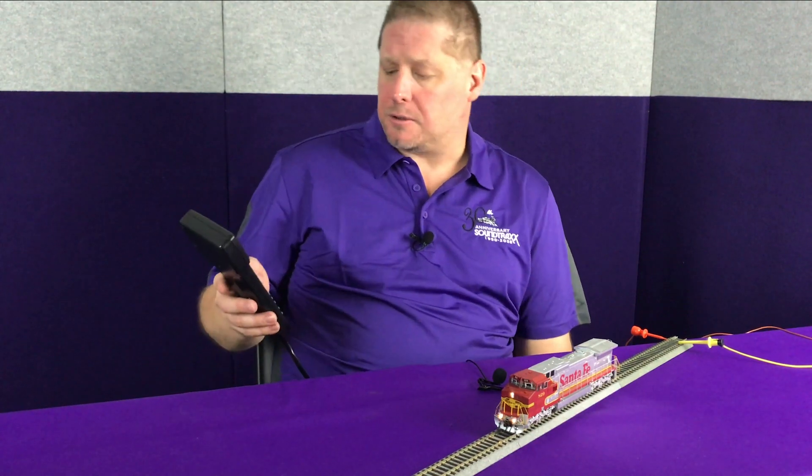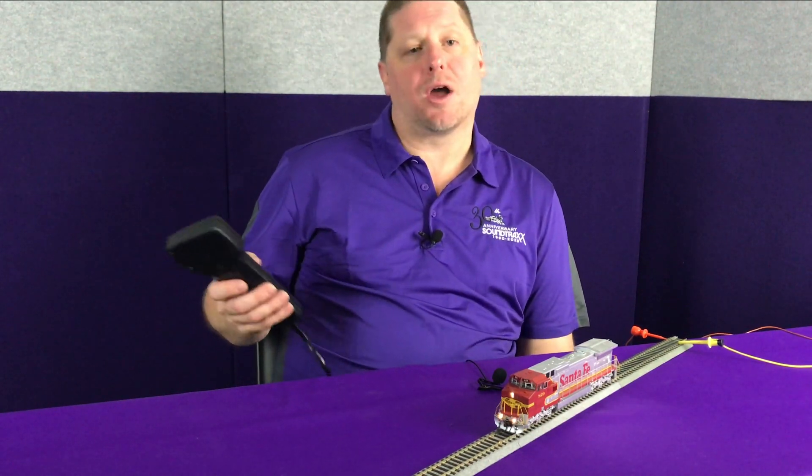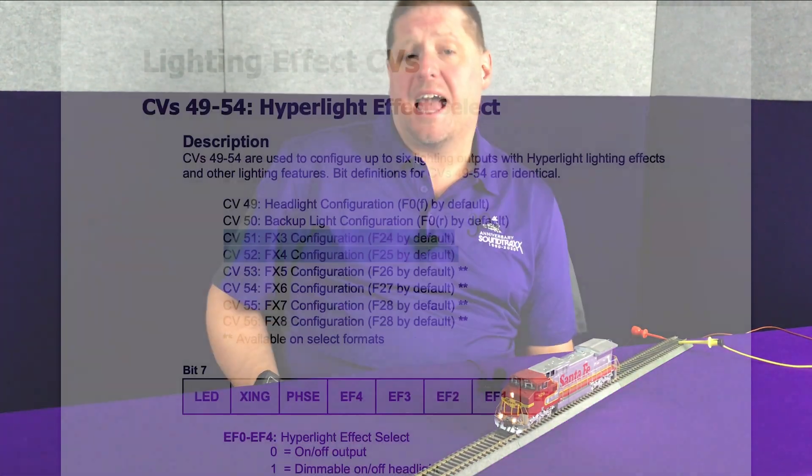But this is only half the battle, because now when I blow my horn the lights are not alternating and flashing. So we need to set that up, and to do that we're going to set that up in the Hyper Light CVs.